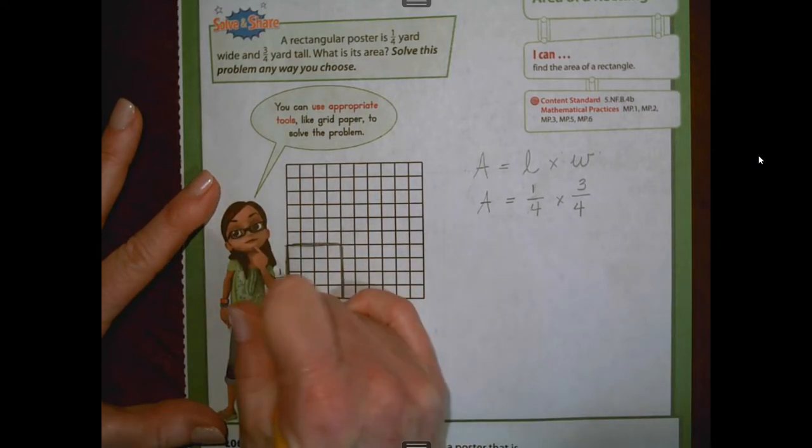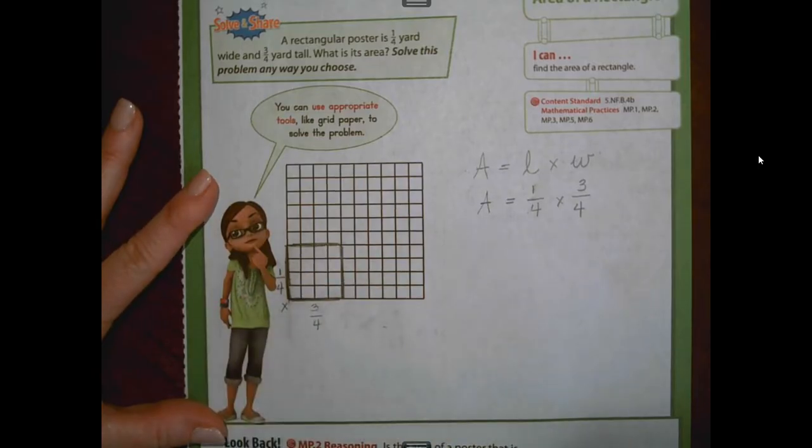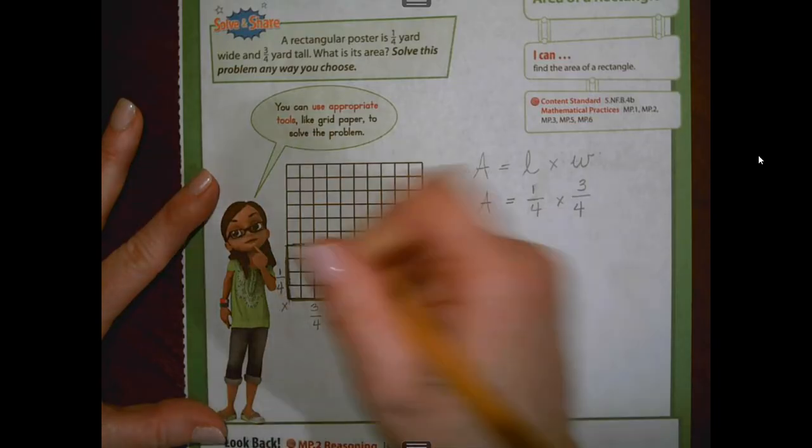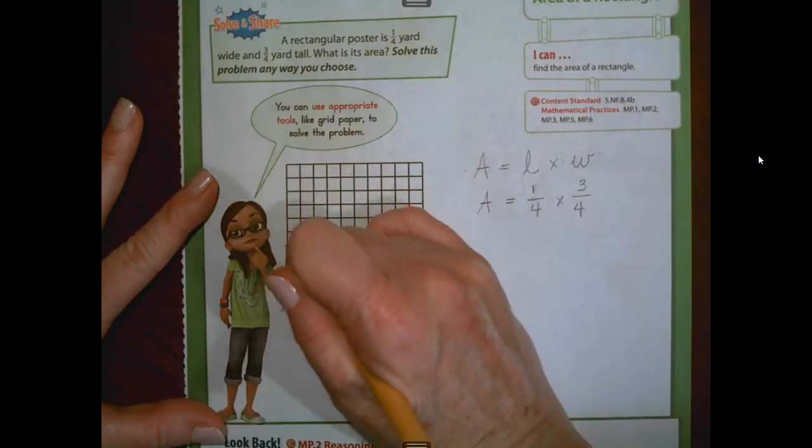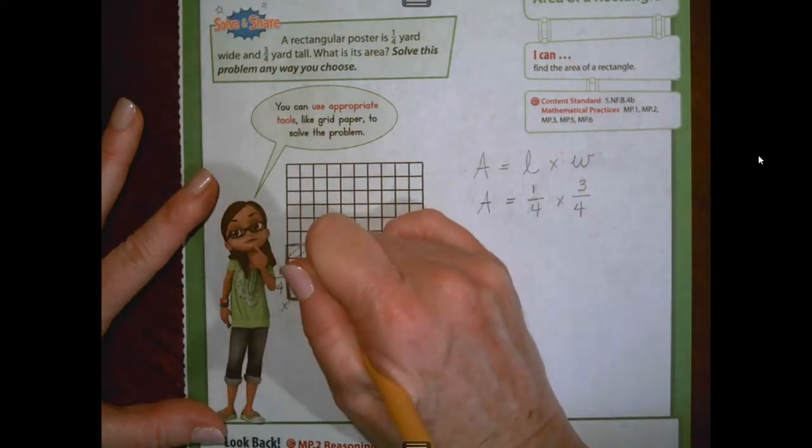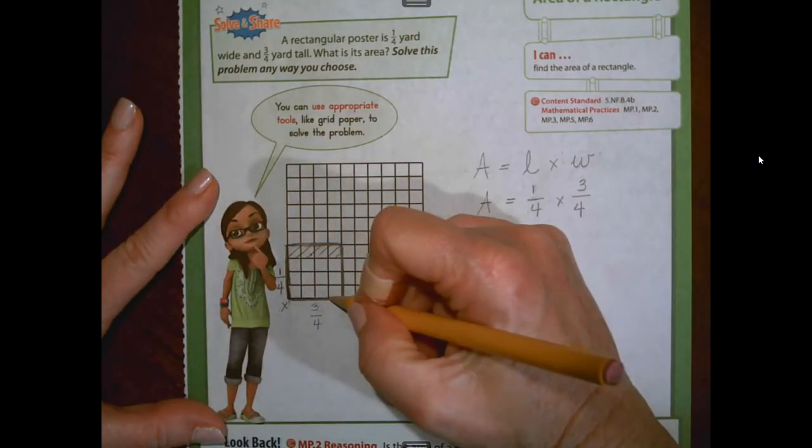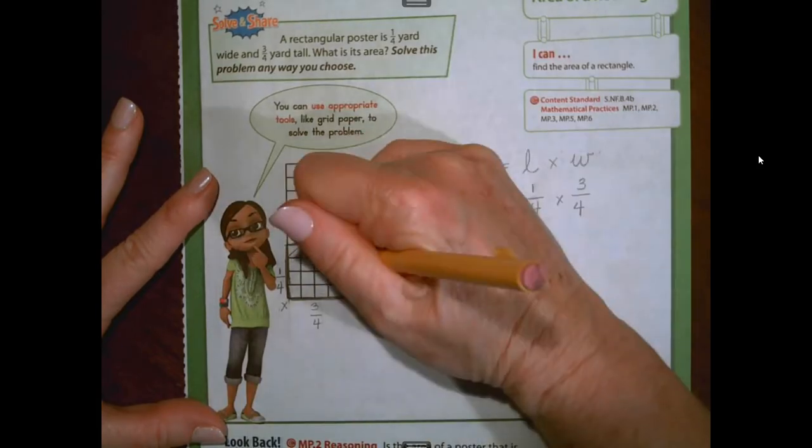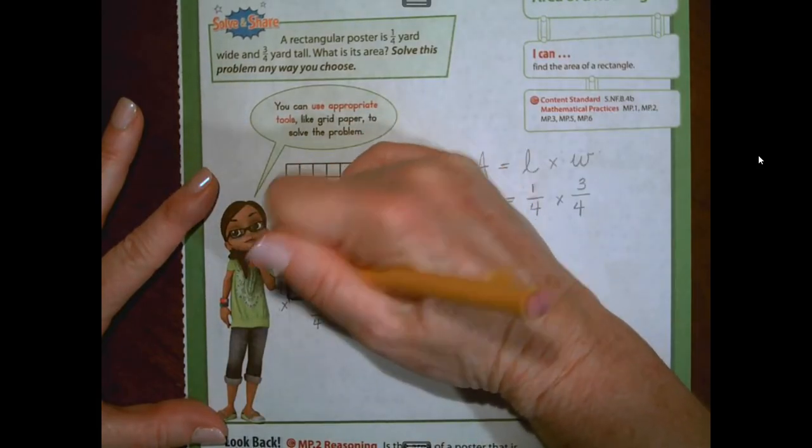So if I were to use my grid paper, and this is just a small portion of it, this would be one whole unit. But we're not doing whole units. We're doing fractionals. So we're going to use one-fourth for one side length and three-fourths for the next. And we're going to go back to yesterday's lesson where we used models to multiply fractions.